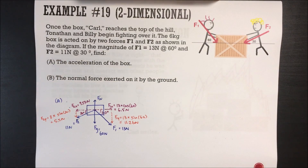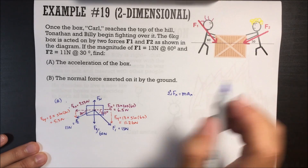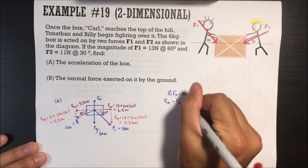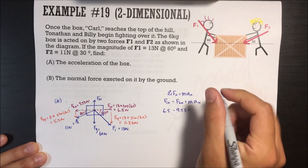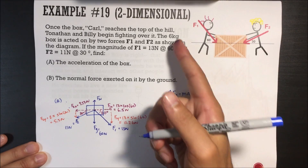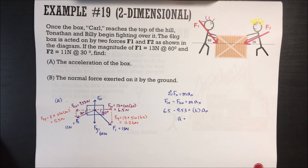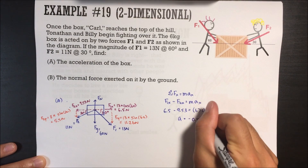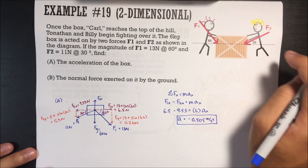The acceleration is in the x direction. Sum of all forces in x equals mass times acceleration in x. There are two forces in x: F1X going to the right and F2X going to the left. So: 6.5 minus 9.53 equals 6 times acceleration. Acceleration equals 6.5 minus 9.53 divided by 6, which is negative 0.505 meters per second squared — so it's going to the left. It looks like Billy is winning.